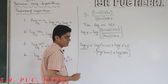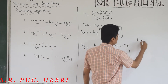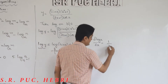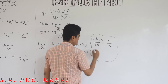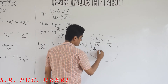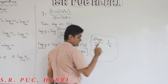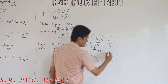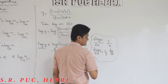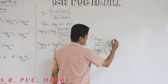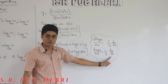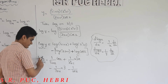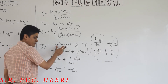The differentiation of log x is 1/x. So the differentiation of log y with respect to x is (1/y)·(dy/dx) — you saw this in implicit function differentiation. Here dy/dx will appear because y is a function of x, not equal to 1 as in a simpler case. So be careful. According to this, differentiating the left side gives (1/y)·(dy/dx).